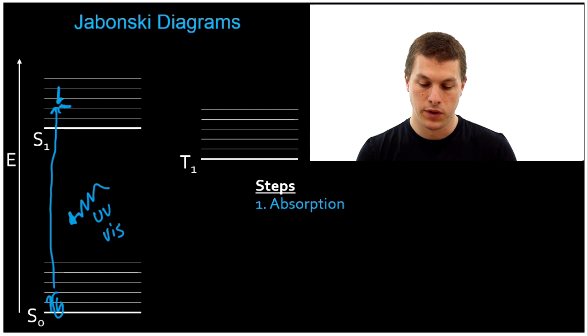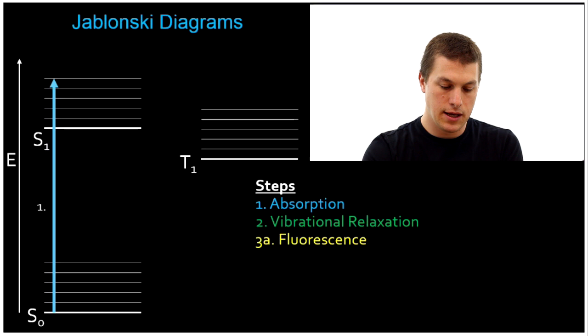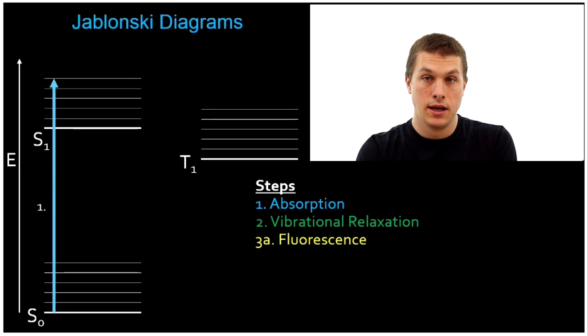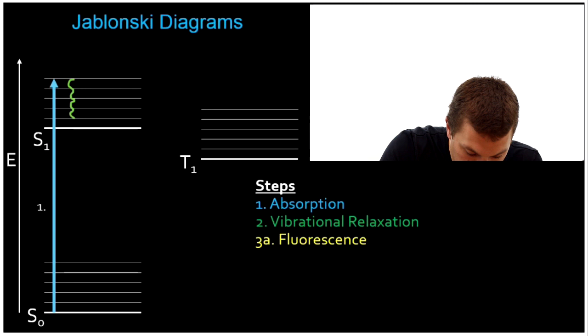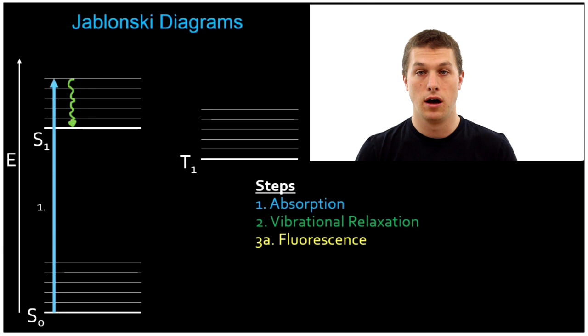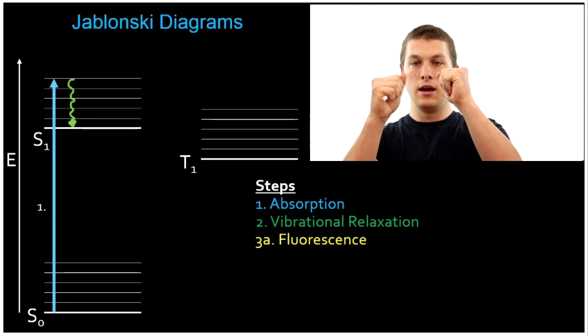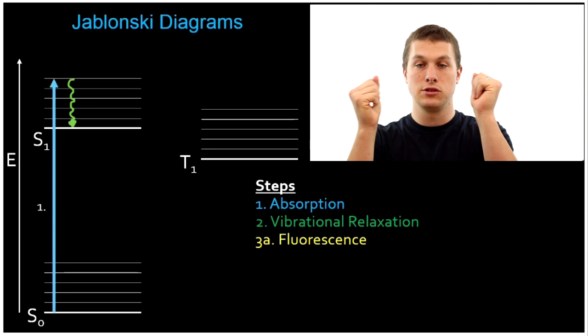Once our molecule is up in its excited state, the next thing that happens is vibrational relaxation. That's where our molecule interacts with its surroundings and gives up some of its vibrational energy as heat. We draw that with a squiggly line. When that occurs, it'll go down to the very bottom of our excited state — it's given up all of its extra vibrational energy, but it's still in the LUMO, still in the excited electronic state. So our molecule was vibrating more after absorbing light, and now after vibrational relaxation it's vibrating slowly again, but our electron is still excited.